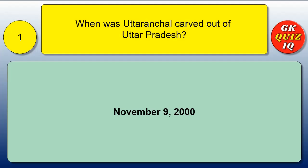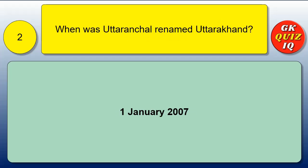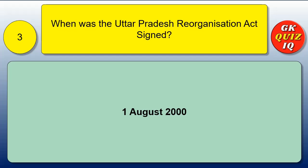When was Uttaranchal carved out of Uttar Pradesh? 9th November 2000. When was Uttaranchal renamed Uttarakhand? 1st January 2007. When was the Uttar Pradesh Reorganisation Act signed? 1st August 2000.